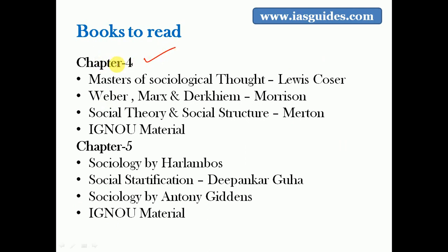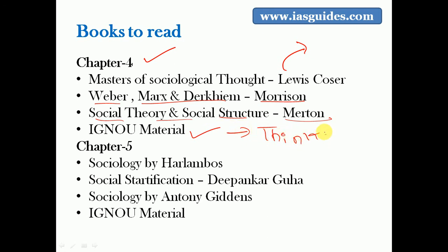Chapter four is related to sociological thinkers. For this, go to Sociological Thought by Lewis Coser, and also study Weber, Marx and Durkheim theory by Morrison, and Social Theory and Social Structure by Merton. Do not neglect the IGNOU MA material for the thinkers section - it is very important. Select the MA IGNOU material concerned with the thinkers section and read it alongside Lewis Coser.